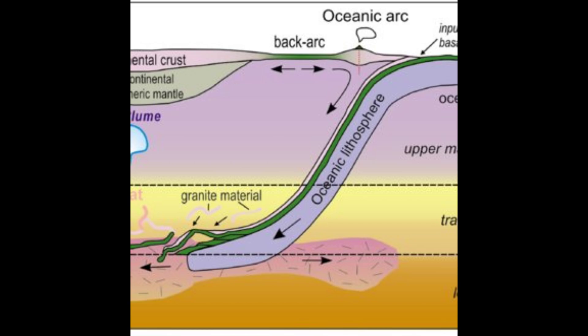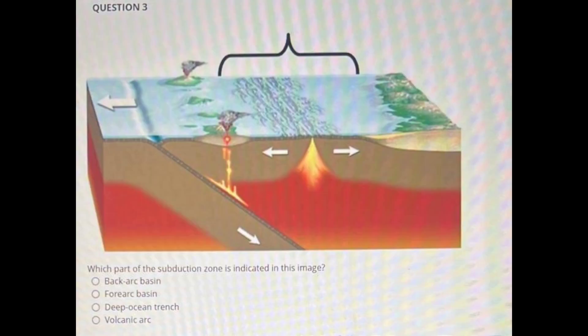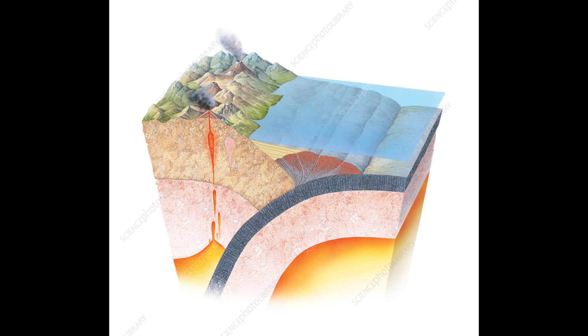Accretionary wedges are thought to behave mechanically somewhat as if they were piles of sand or snow bulldozed in front of a plow. They grow into a triangular wedge shape in cross section that increases its slope until it becomes oversteepened and mechanically unstable, which then causes the toe of the wedge to advance by thrusting, or the top of the wedge to collapse by normal faulting. Either of these two processes can reduce the slope of the wedge and allow it to become more stable.